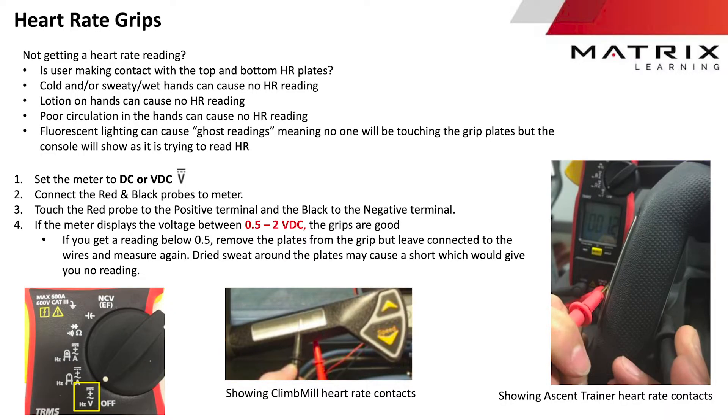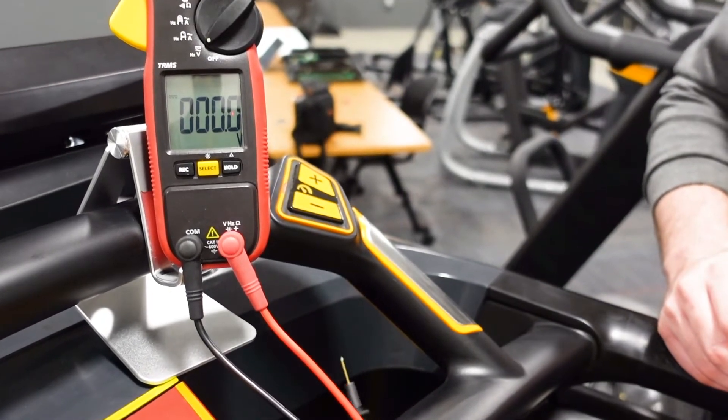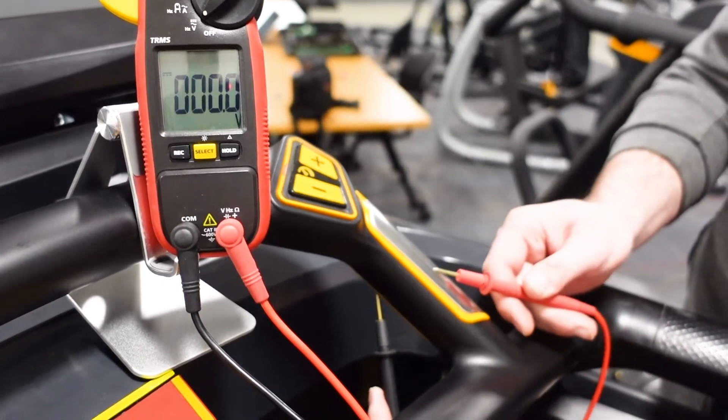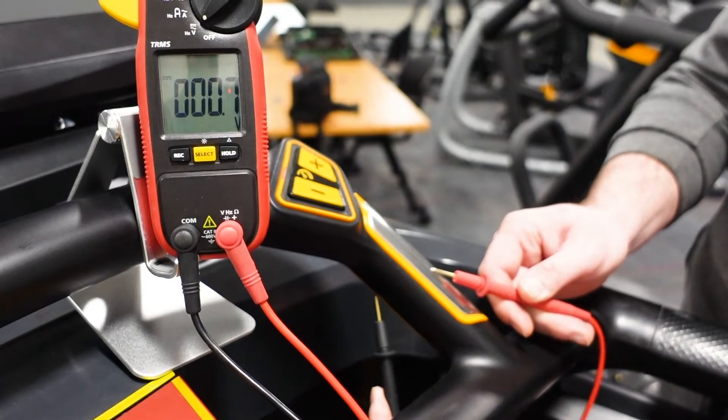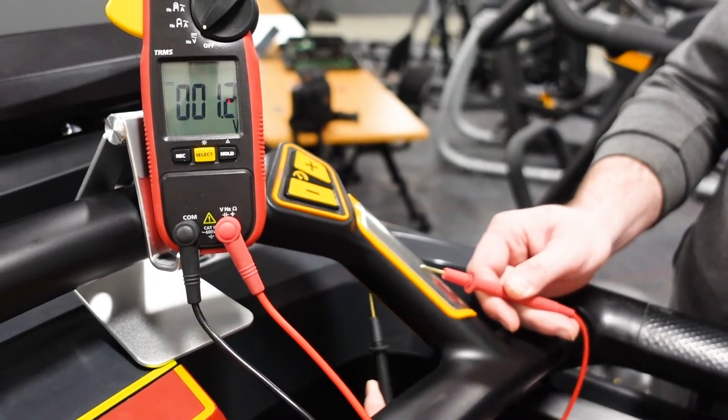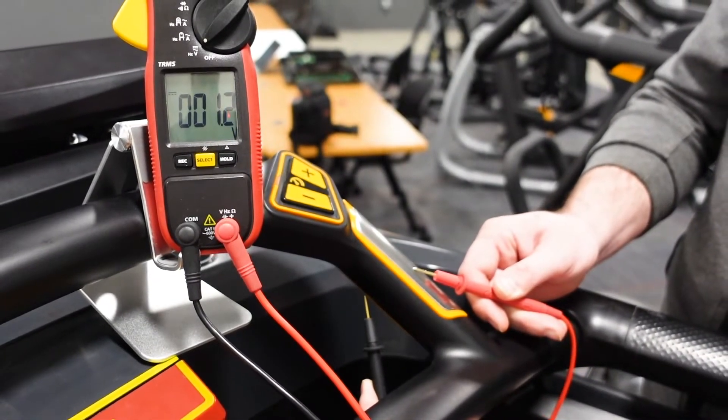If you need to test the heart rate grips, touch the red probe to the positive terminal of the grip and the black probe to the negative terminal. If the meter displays the voltage between 0.5 and 2 volts DC, the grips are in good working order.